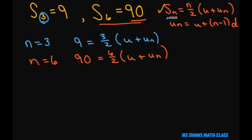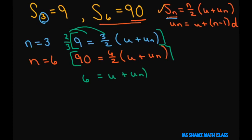Next I'm going to simplify these equations. Multiplying the first equation by 2/3 and distributing gives 18 divided by 3 equals 6, so 6 equals u plus u sub n. For the second equation, multiplying both sides by 1/3 gives 30 equals u plus u sub n.